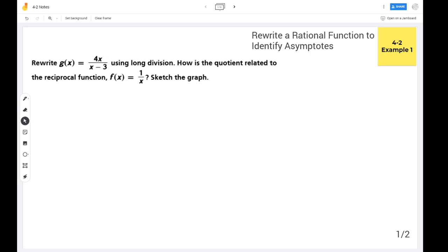Hello, this is Britt Caswell with another example video. In today's video, we're covering example 1 from section 4-2 in the Savas Realize Algebra 2 textbook. The goal of today's example is to rewrite a rational function to identify its asymptotes.